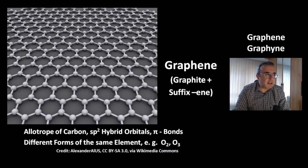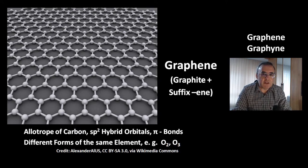Allotropes are different forms of the same element. For example, oxygen has the allotropes O2 — dioxygen — and O3 — ozone.